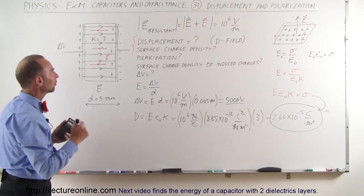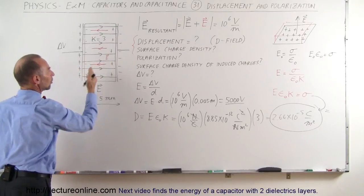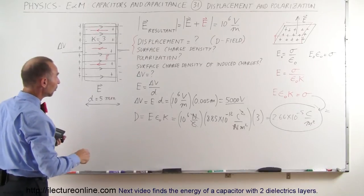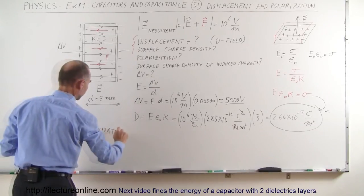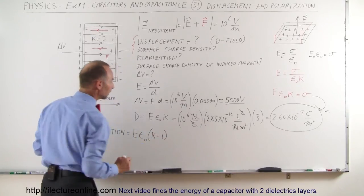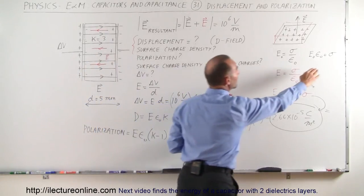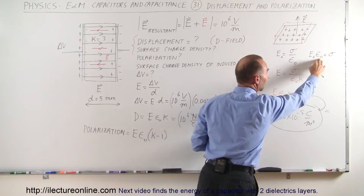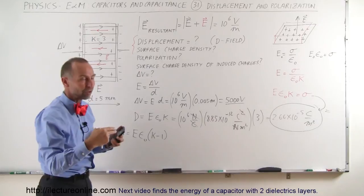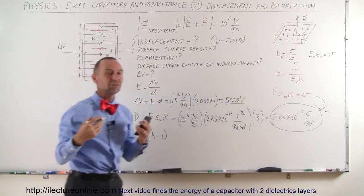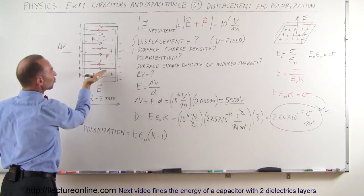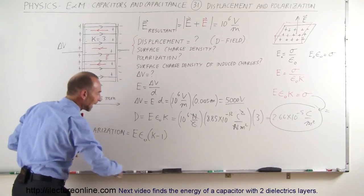The polarization is the effect of the internal action of the atoms inside the dielectric reversing direction and setting up an electric field in the opposite direction. By definition, polarization P equals E times epsilon sub nought times (k minus 1). The minus 1 comes from subtracting the charge density without a dielectric (epsilon sub nought times 1) from the charge density with the dielectric (epsilon sub nought times k), giving k minus 1 as the polarization factor.